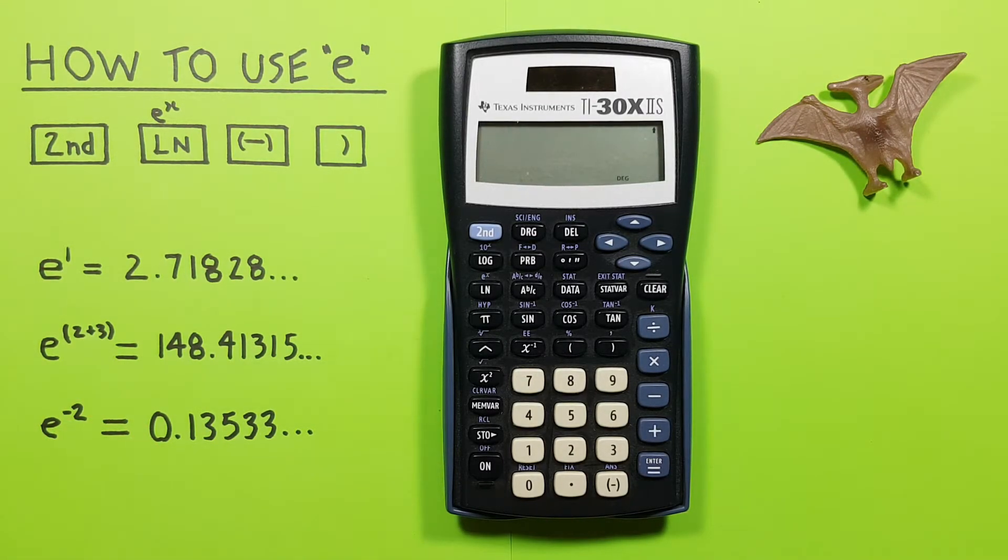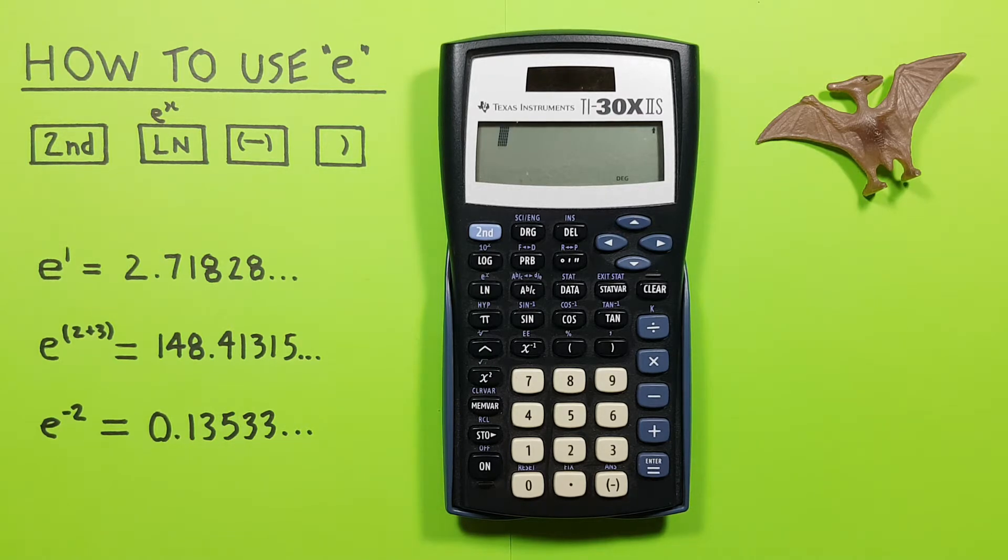Hello and welcome to HD Calcs. I'm Rick, and in this video we're going to have a look at how we can use the constant E, also known as the natural antilog, or Euler's number, on the TI30X2S calculator.